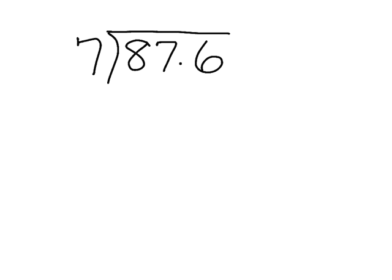But before we do that we want to make an estimate so that we know where to put the decimal point back when we're done. So when I have a problem like this where I have 7 into 87.6, I want to estimate my 87.6 to something that will be close as 7 does go in.